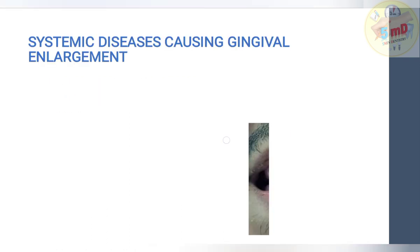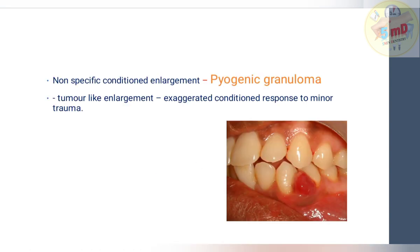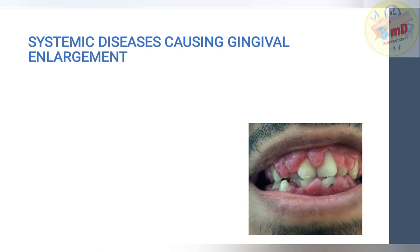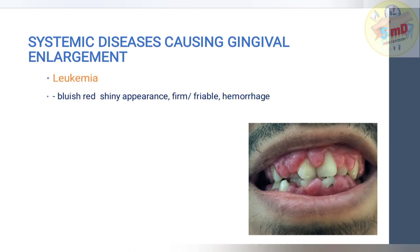Pyogenic granuloma is a non-specific conditioned enlargement presenting as a tumor-like enlargement. It is usually an exaggerated response to minor trauma — such as toothpick or fishbone trauma. The name is actually misleading. Now we will see about systemic diseases causing gingival enlargement.